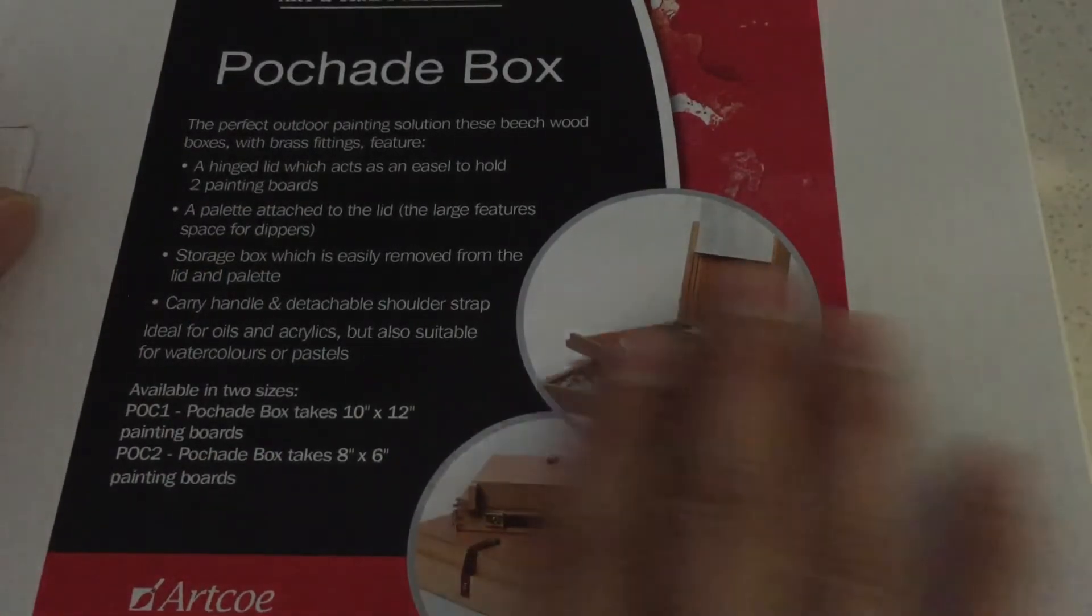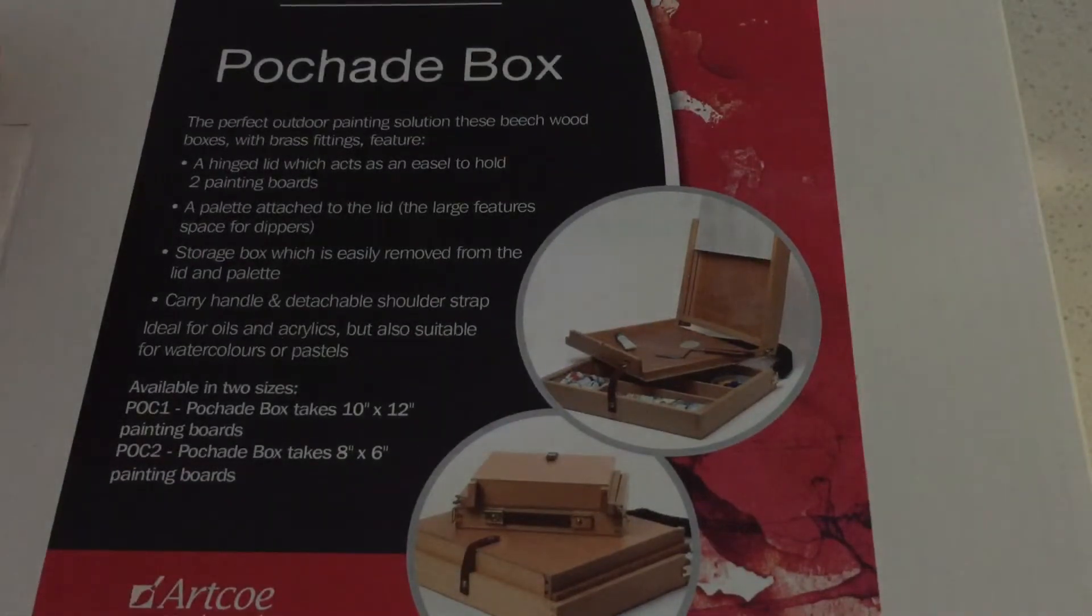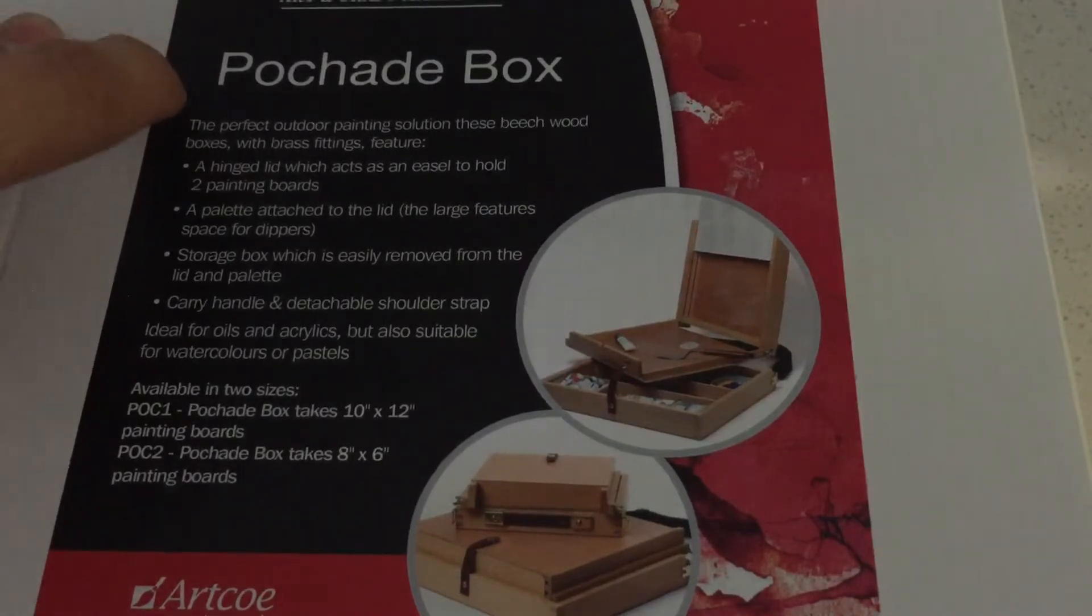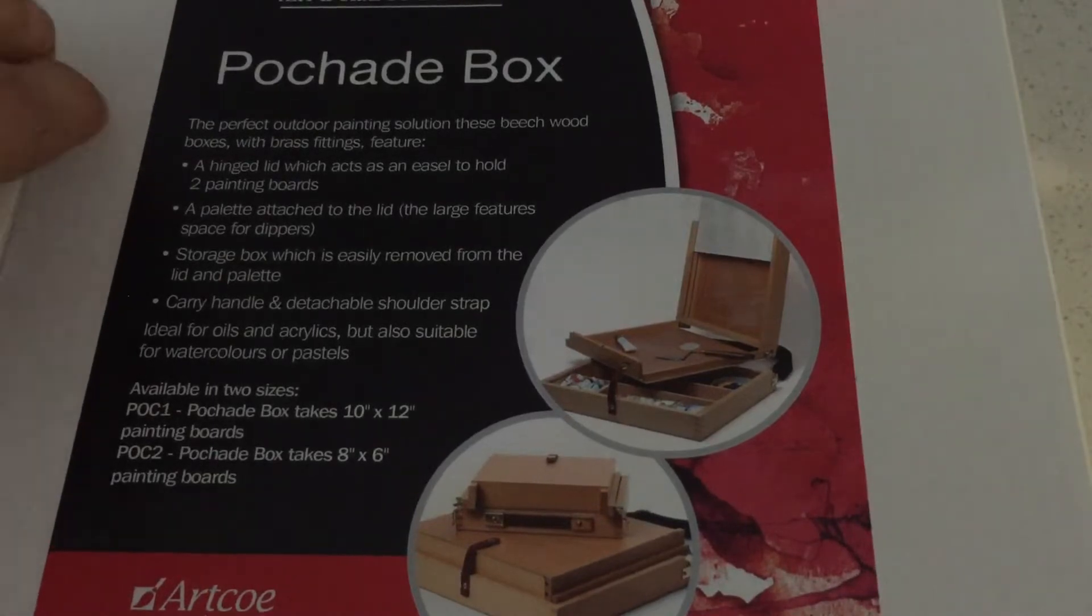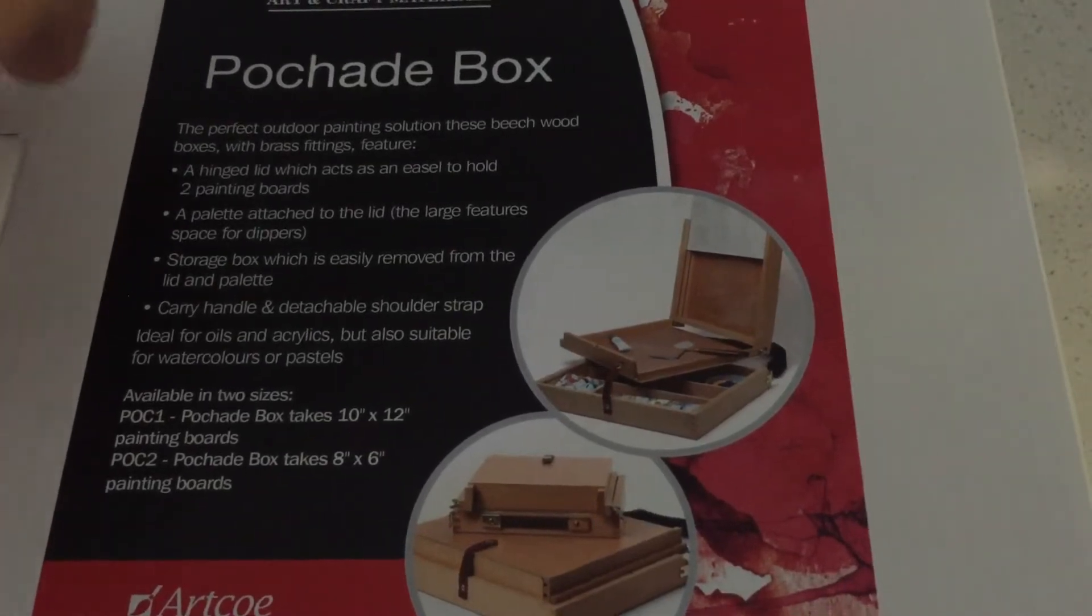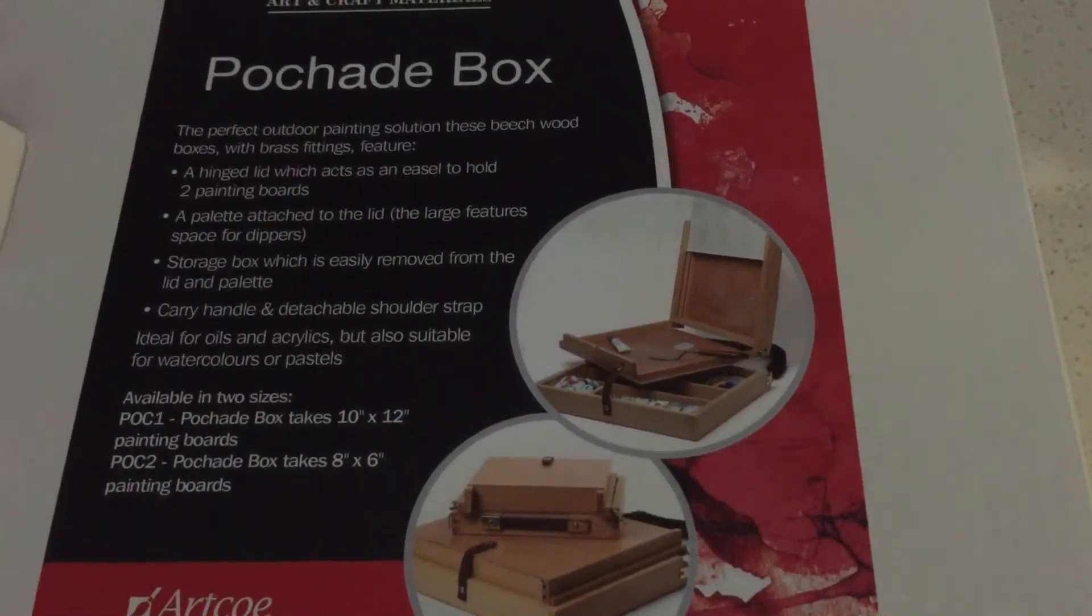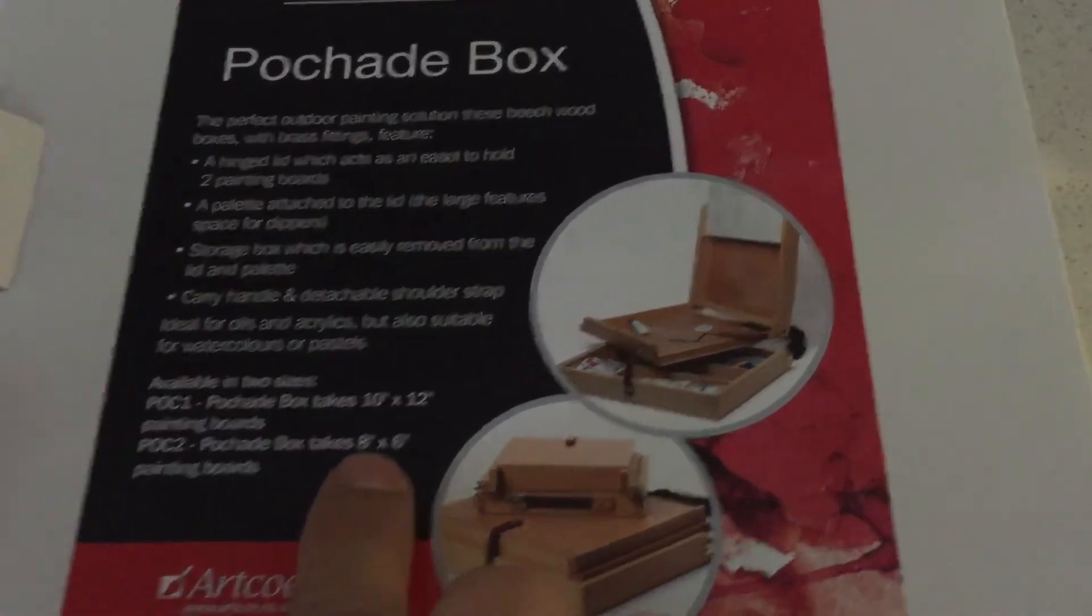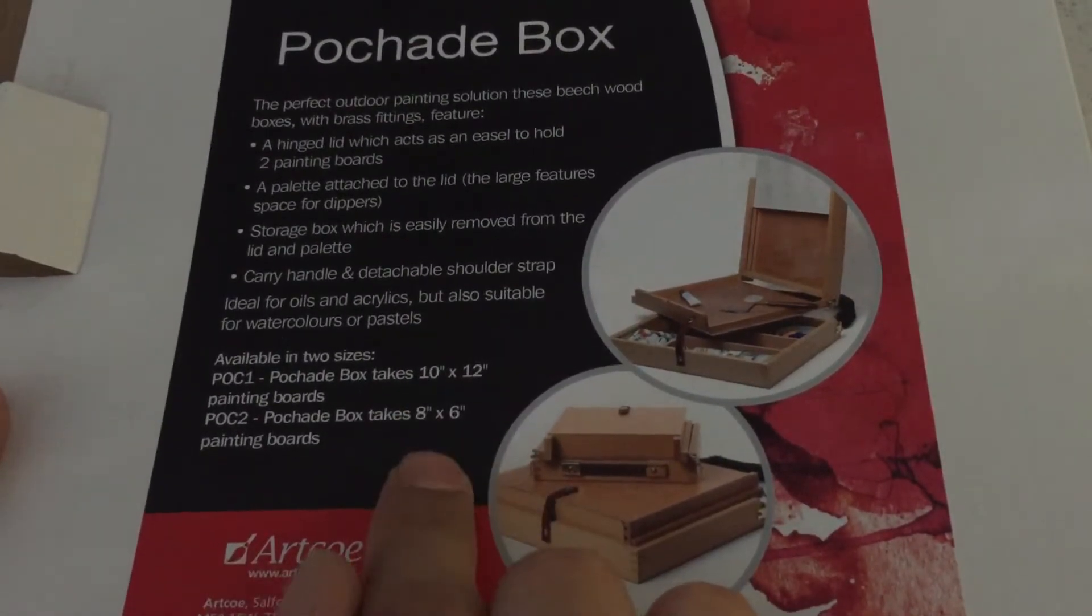So on the box, it does say it has a hinge lid which acts as an easel to hold two painting boards. It has a pallet attached to the lid, and it has a large space for dippers. It has a storage box which is easily removable and a carry handle, an attachable shoulder strap. So it looks like it has two sizes: 10x12 and 8x6. I got the 8x6.